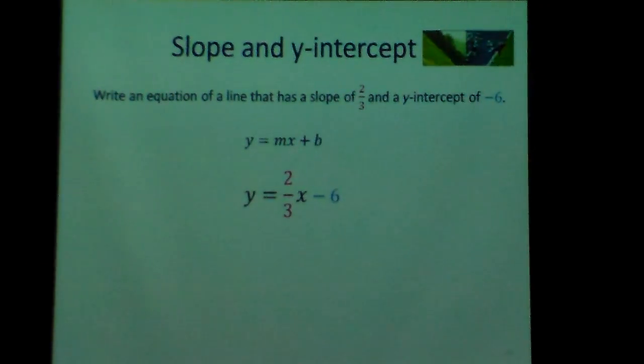So the slope is two-thirds x and the y-intercept is negative six, which we will also plug in.